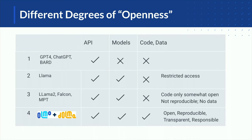Different companies and institutes have different definitions of openness. For example, OpenAI, Google, and so on are releasing the API — the API is open. Meta, Falcon, and Databricks have started to make models open for research purposes. But still, sometimes there is restricted access and not everything is open, including the training data. Here we introduce OLMO and DOLMA, where our goal is to make models, data, and all source code fully open, reproducible, and transparent, and share it with the research community, responsibly releasing it under appropriate licenses.